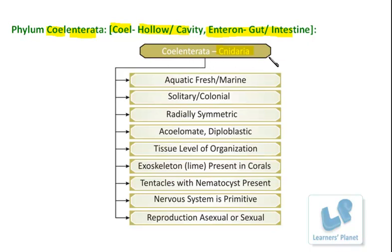The organisms that belong to the group Coelenterata have some specific features that place them in this group. The first feature we are going to compare is the habitat. The organisms belonging to Coelenterata are living in the aquatic region — that means their habitat is the water body, and that water can be either fresh or marine, saline water or fresh water. Other organisms like Porifera are also aquatic, but they are all marine.